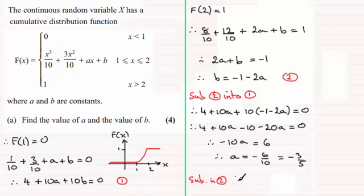So if we just put here sub in equation 2, what does that give us? It gives us b equals -1 - 2 times -3/5, and so that's going to be 6/5 - 1, or -1 + 6/5, which is going to be 1/5. So we've got our values then for a and for b: -3/5 and 1/5 respectively.